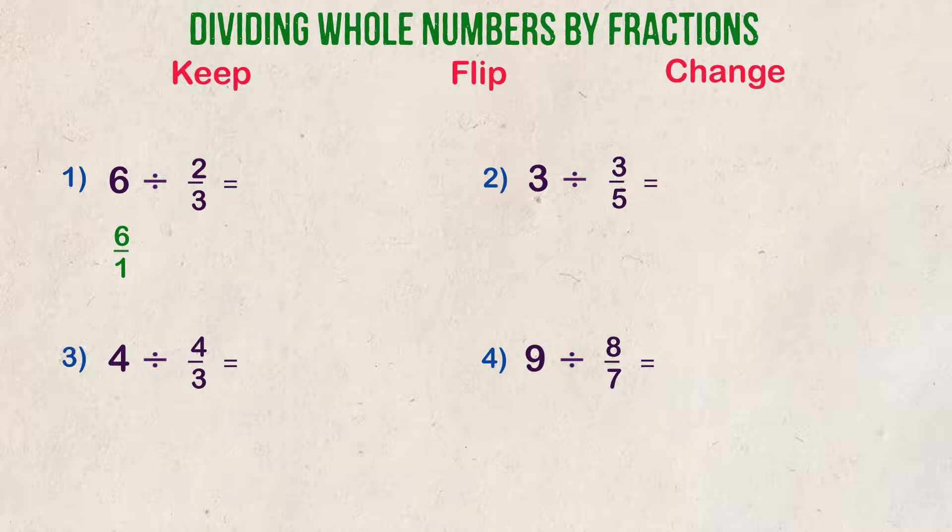F is for flip. That is for the second fraction. We're going to flip, or find the reciprocal, of the second fraction. What that means is the denominator becomes the numerator, and the numerator becomes the denominator. The second fraction is now 3 over 2.